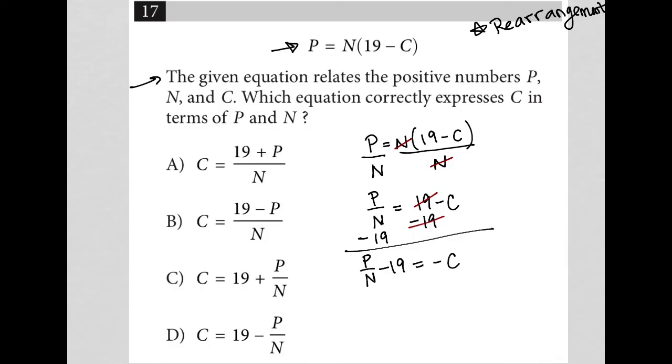So almost there. I'm almost to C being isolated. It technically is isolated, but I just have a negative C instead of a positive C. So I'm going to multiply this entire equation by negative 1, which would give me a negative P over N plus 19.